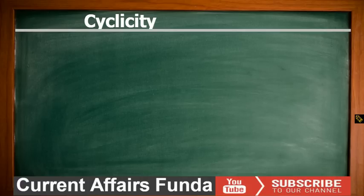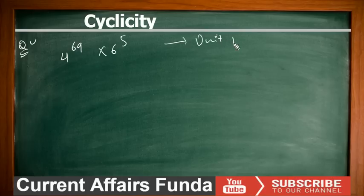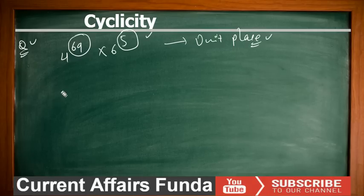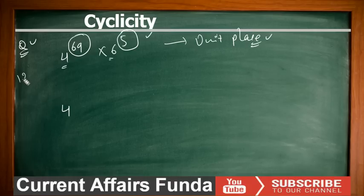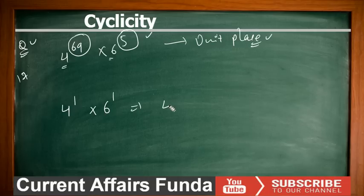Next example: find the unit place of 4^69 × 6^5. For 4^69: 69 ÷ 4 gives remainder 1, so effective power is 1 — 4^1 = 4, unit digit 4. For 6^5: 5 ÷ 4 gives remainder 1, so effective power is 1 — 6^1 = 6, unit digit 6. Multiply: 4 × 6 = 24, so the unit place is 4.